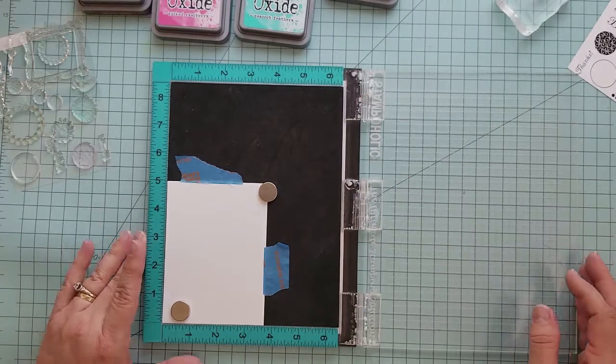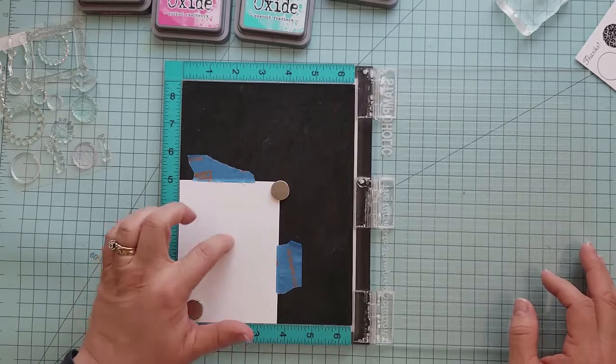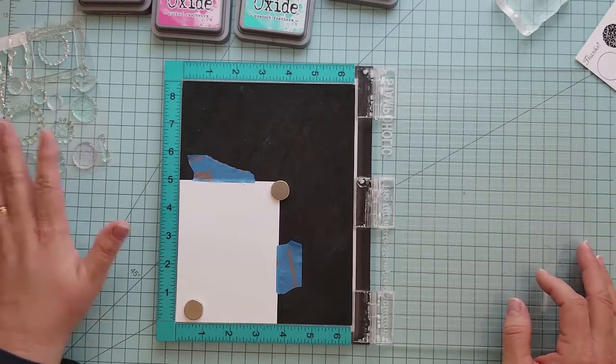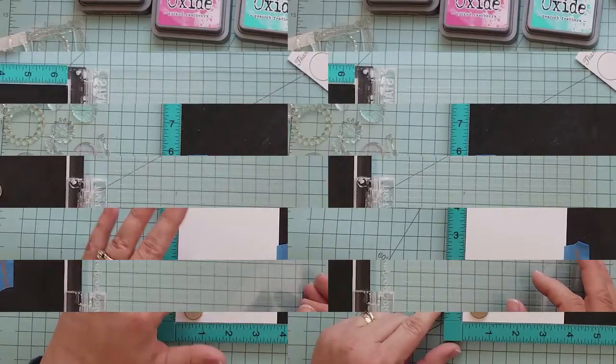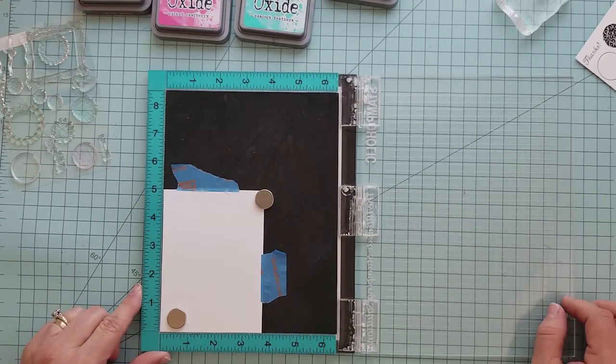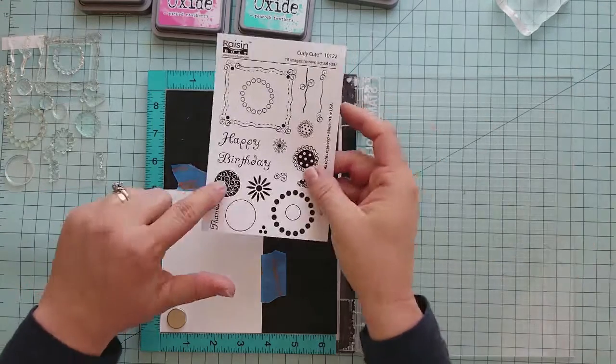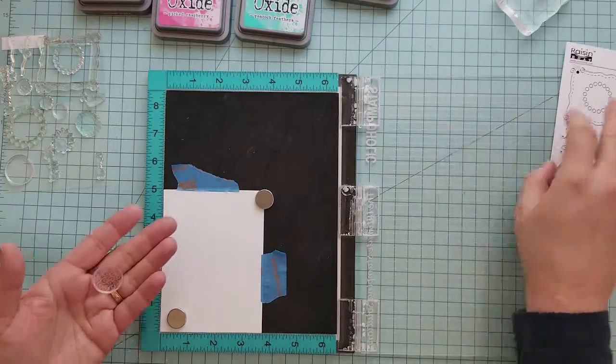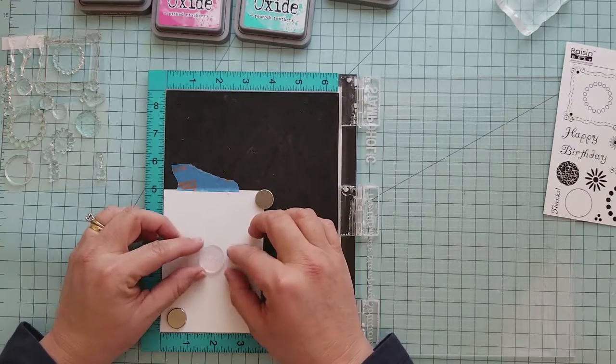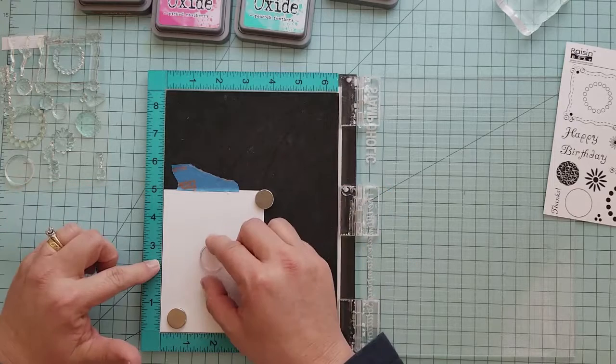To get us started, I have a piece of 110 pound Neenah cardstock and a stamp positioning tool, which you don't have to have, but I use because I like to repeat stamps. I'm going to be using distress oxide inks: picked raspberry, peacock feathers, walnut stain, and antique linen. Those are the colors of the mood board that you saw earlier in the video. I really do hope you guys will come over and check it out.